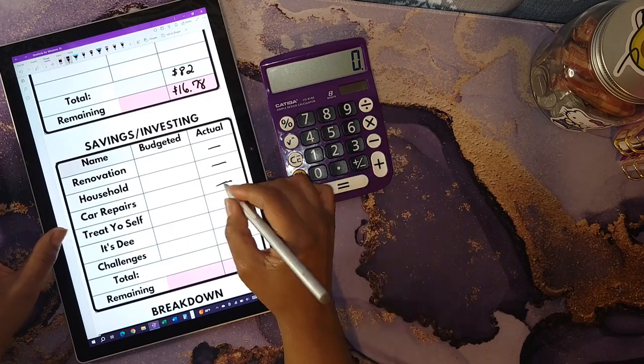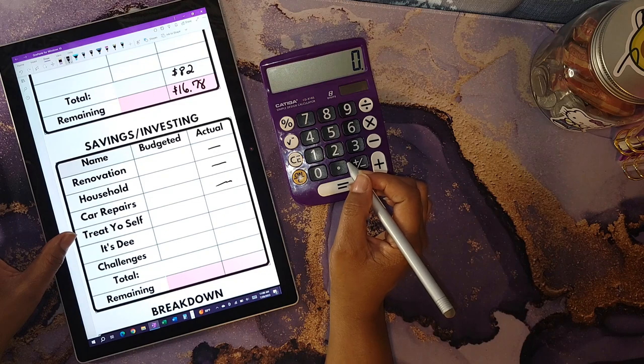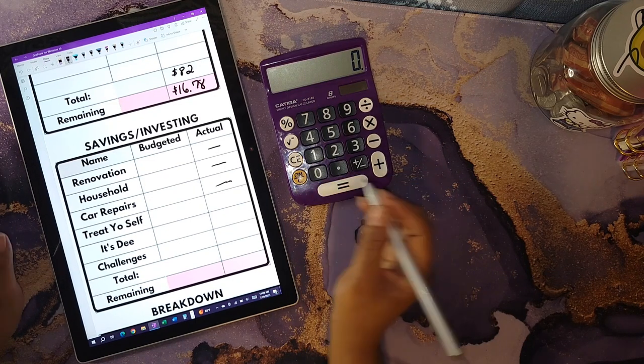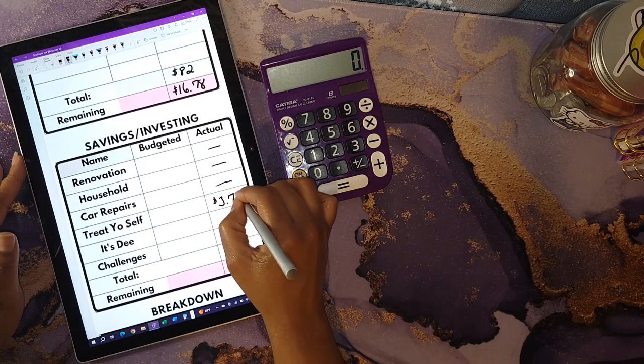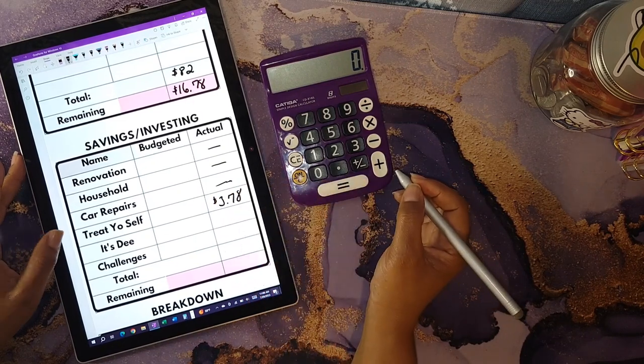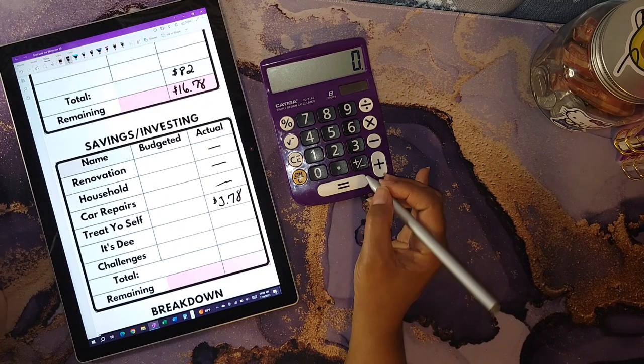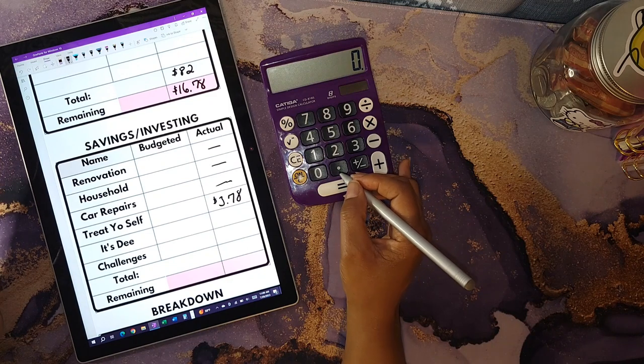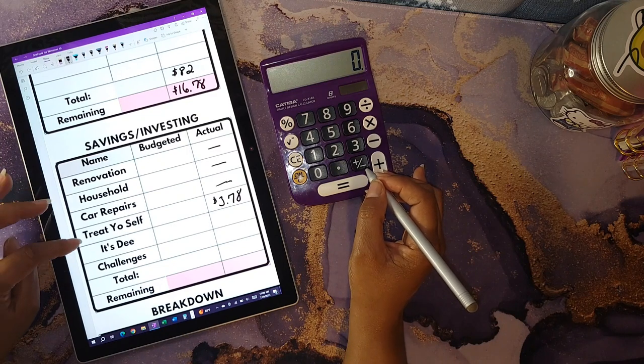For my treat yourself account, I will be using this once I get my mortgage paid off and I'm going to treat myself to something. I was able to add a total of three dollars and seventy-eight cents. This money comes basically from the change from all of my deposits. So if I get a dollar and seven cents, that seven cents is going into my treat yourself account.